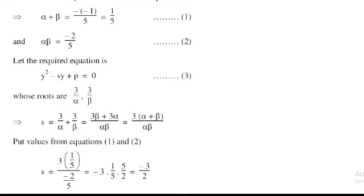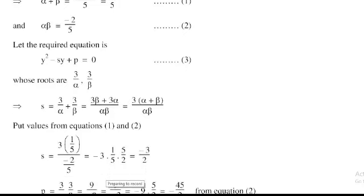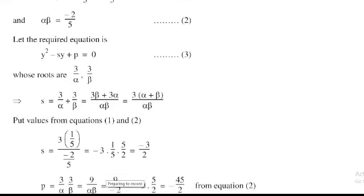Taking the denominator term into numerator form: S = 3/5 × (5/−2) = −3/2. So S = −3/2.